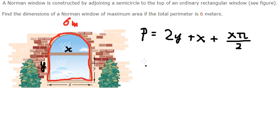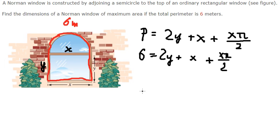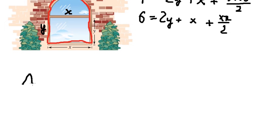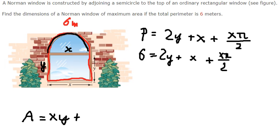Now the perimeter equals six, so I will put the number six here. The next part is that they want us to maximize the area. The area of this window has one rectangle in here and a half of the circle.